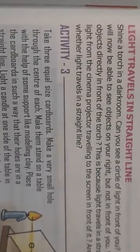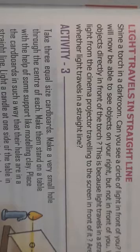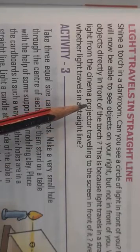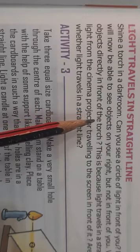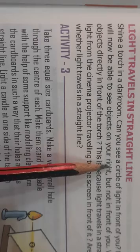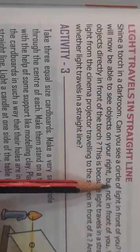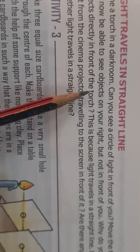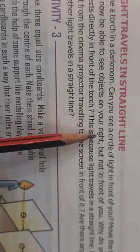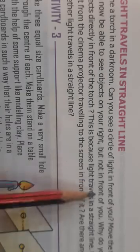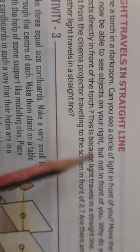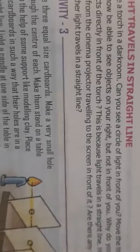The property of light is that light always travels in a straight line. Children, go to a dark room, take a torch and switch it on. You can see a circle of light in front of you. If you move the torch to your right or left, you will be able to see objects on your right and left respectively. This is because light always travels in a straight line.